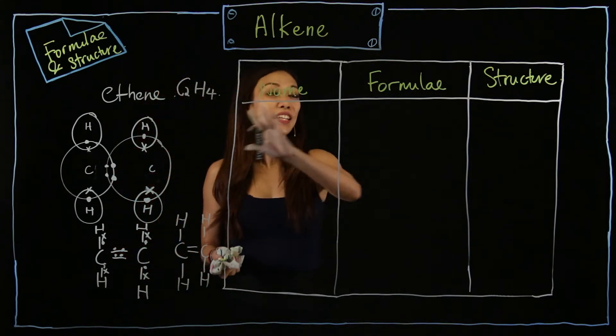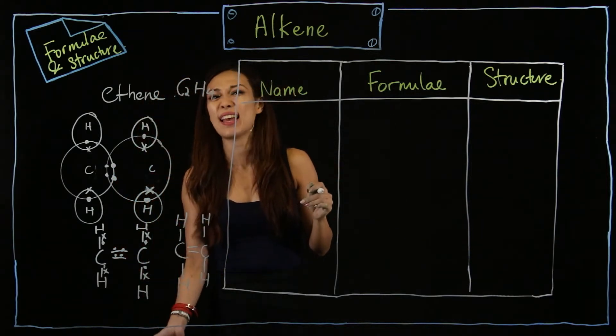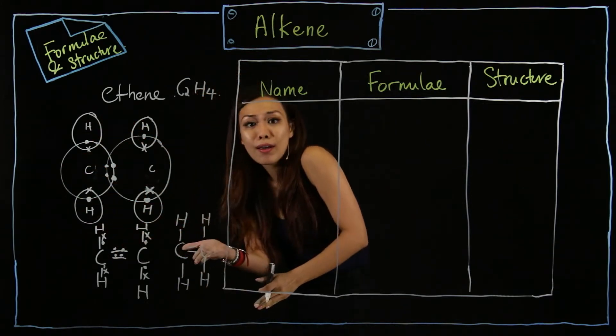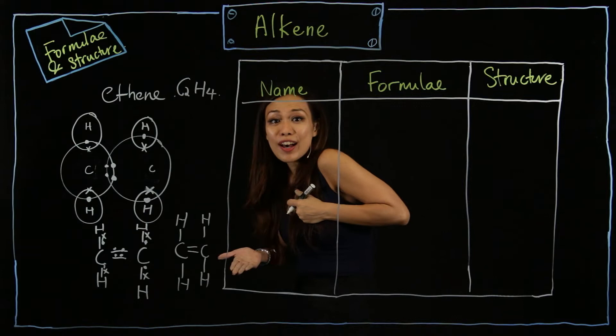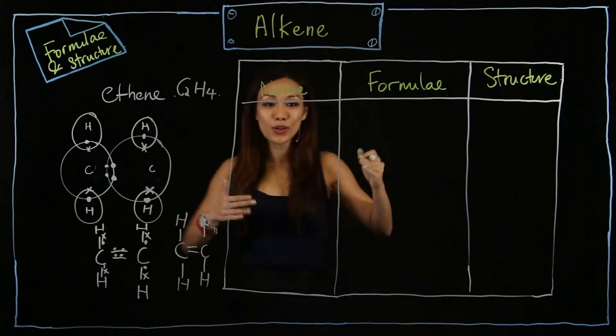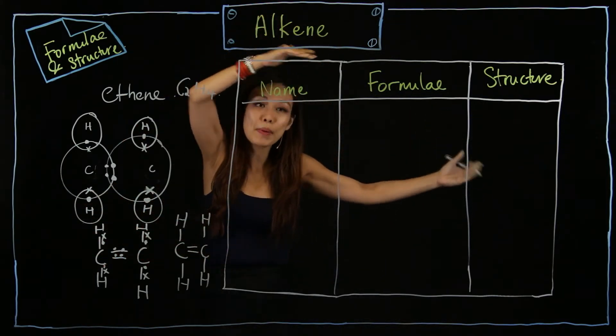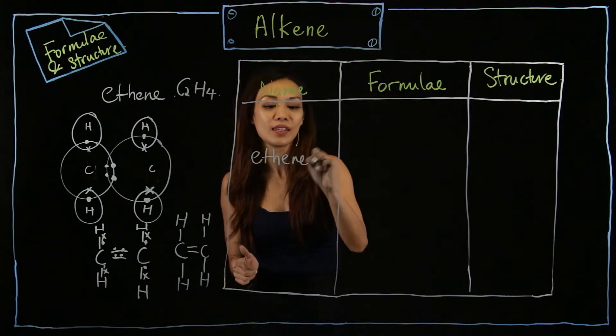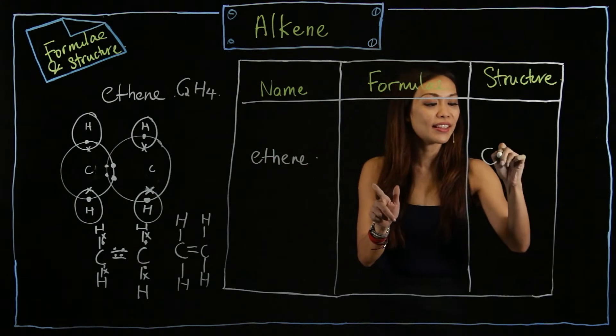The name is there, remember. Now you understand why there's no methene - because you can't form a double bond by yourself. You need to have two carbons. So two carbons will form a double carbon bond, a C=C double bond. So you start with ethene. The structure will look like this - C2H4.